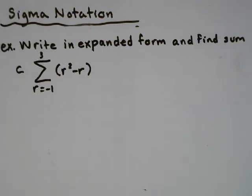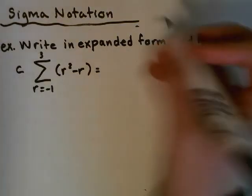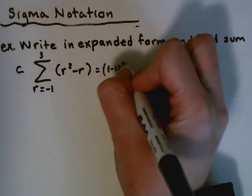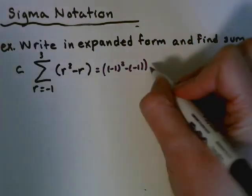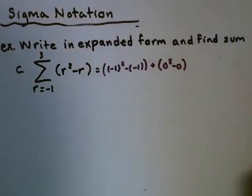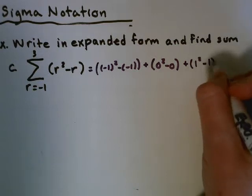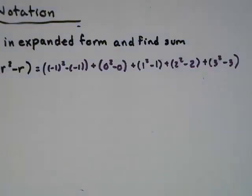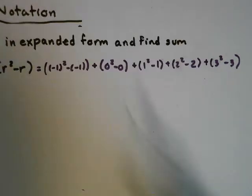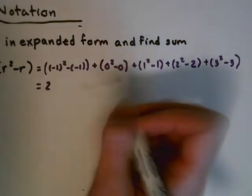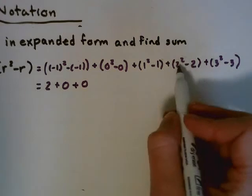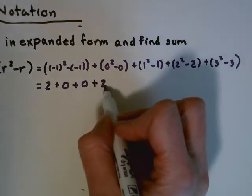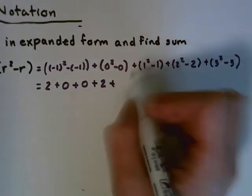For our next example we have from r equals negative 1 to 3 of r squared minus r. So this is going to be negative 1 squared minus negative 1, then 0 squared minus 0, then 1 squared minus 1, then 2 squared minus 2, then 3 squared minus 3. Simplifying: negative 1 squared minus negative 1 is 2, 0 minus 0 is 0, 1 minus 1 is 0, 2 squared minus 2 is 2, and 3 squared minus 3 is 6.